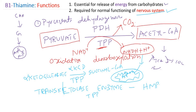Thiamine also helps in proper functioning of the nervous system through its active form thiamine triphosphate, which helps in nerve conduction. That is why people suffering from thiamine deficiency invariably suffer from peripheral neuropathy. Thiamine activates chloride channels by phosphorylating some of their components. In summary, thiamine functions mainly in carbohydrate metabolism as a coenzyme for pyruvate dehydrogenase complex, alpha-ketoglutarate dehydrogenase, and trans-ketolase.